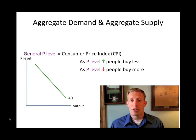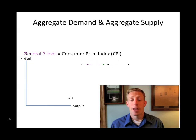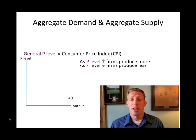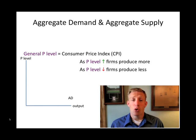On the aggregate supply side, we see that if price goes up, it encourages people to produce more, and if the price level goes down, it encourages people to produce less as a whole. And so we have an upward sloping aggregate supply curve.